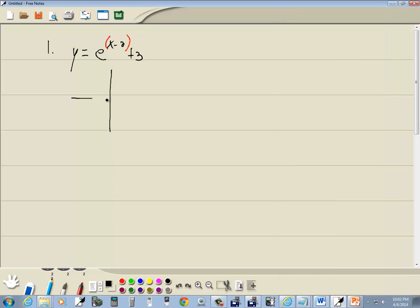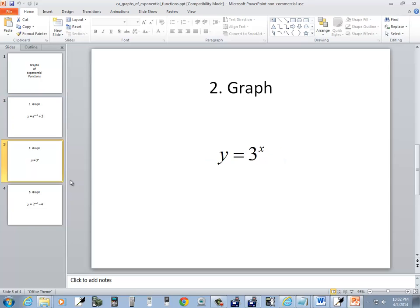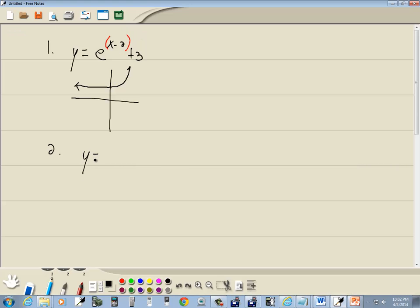And that would be our graph. So something like that right there. Okay, let's look at our second problem. y is equal to 3 to the x.